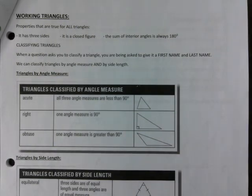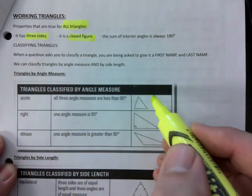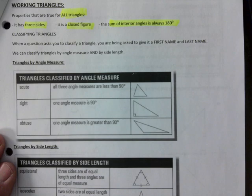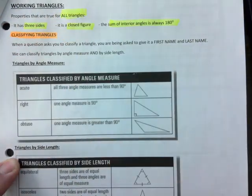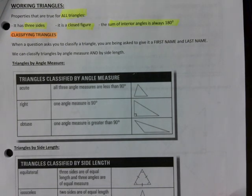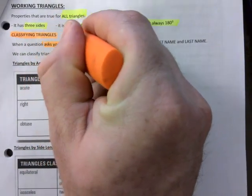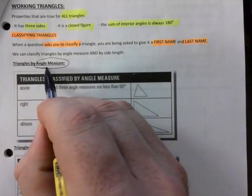This is the meat and potatoes of today's lesson: classifying and working with triangles. All triangles share: three sides, closed figure, and interior angles that add up to 180. Classifying is where it's at today — when you classify something you're naming it. When someone asks you to classify, give the triangle a first and a last name.